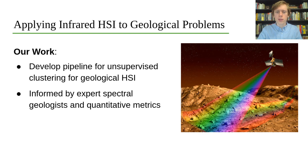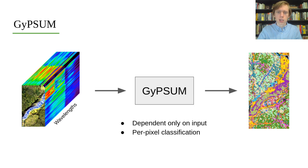In our work, we develop a fully unsupervised workflow for feature extraction and clustering, informed by both expert spectral geologist input and quantitative supervised and unsupervised metrics. To ensure good performance on a per-image basis, we develop a method that is only dependent on a single input image. GYPSOM takes a single hyperspectral image cube as input and produces a single per-pixel clustering map that is only dependent on the input image.